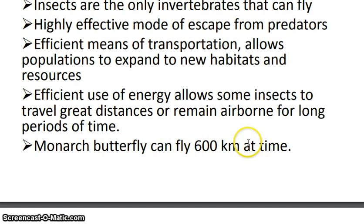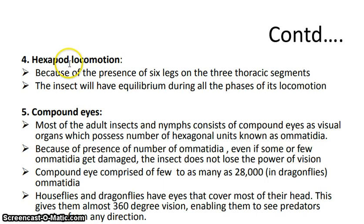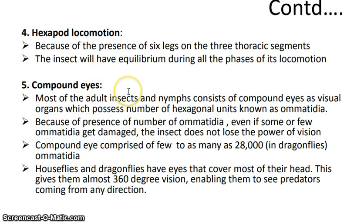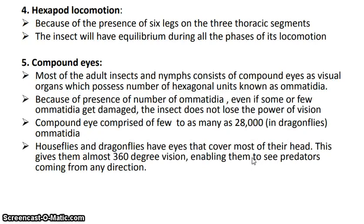Hexapod locomotion — 'hexa' meaning six — refers to their six legs, or three pairs of legs, on the thoracic region, which maintain the equilibrium of the body during locomotion. Insects have compound eyes composed of small units called ommatidia, each acting as an independent unit. If one ommatidium is damaged, insect vision is unaffected. Ommatidia provide a visual field of approximately 360 degrees, and the number of ommatidia varies from a few to thousands — 28,000 in the dragonfly.